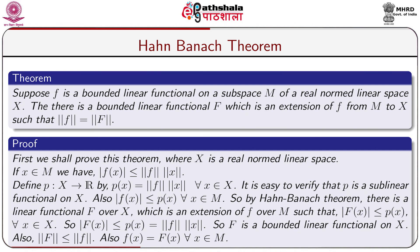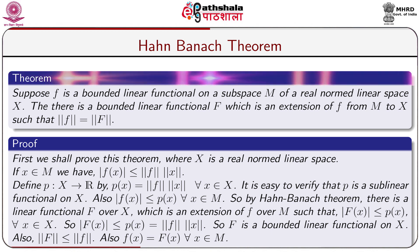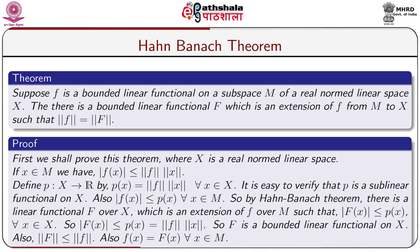We shall now prove the Hahn-Banach theorem over a normed linear space. Suppose F is a bounded linear functional, meaning F(x + y) = F(x) + F(y) for all x in X, and |F(x)| ≤ ‖F‖·‖x‖ for all x in X. In this theorem, f is a bounded linear functional on a subspace M of a real normed linear space X. Then there is a bounded linear functional F, which is an extension of f from M to X, with preservation of norm, i.e., ‖f‖ = ‖F‖.